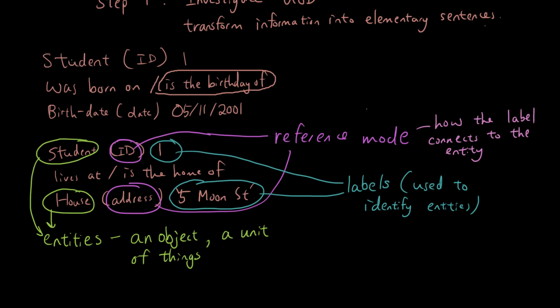The reference mode is how the label connects to the entity. Going back to our first sentence, the student and the birthday are entities. The reference modes are ID and date, and the labels are 1 and 5th of November 2001. What else do we need to talk about? The roles. These are the roles, which specify the relationship between entities.